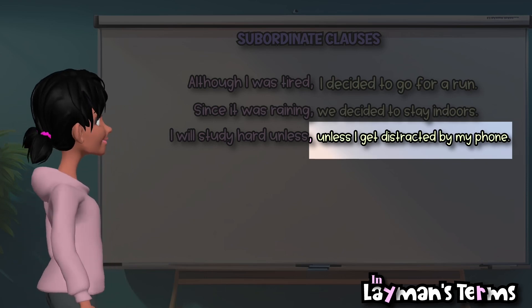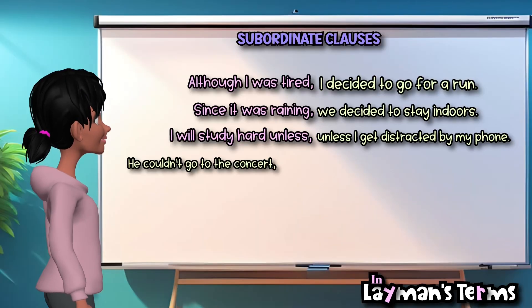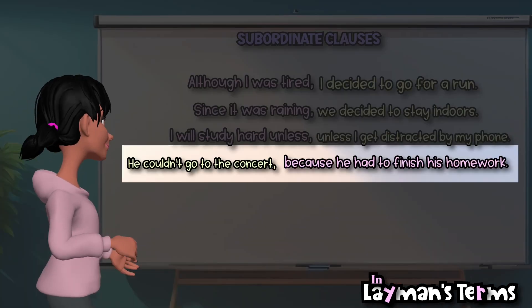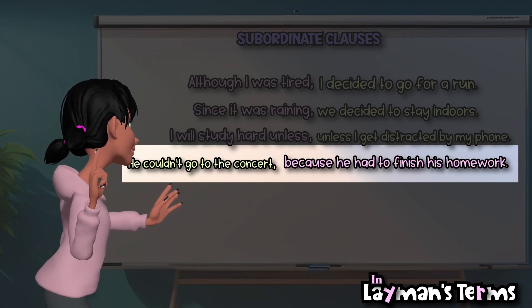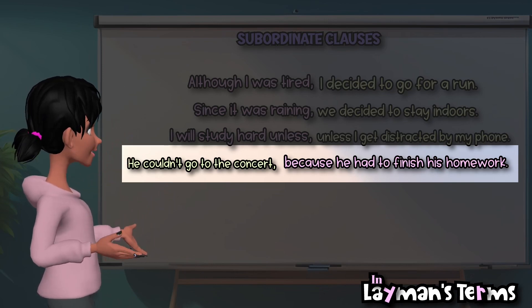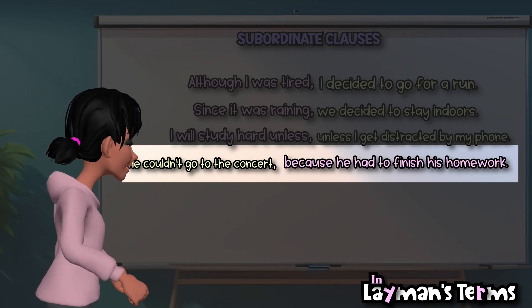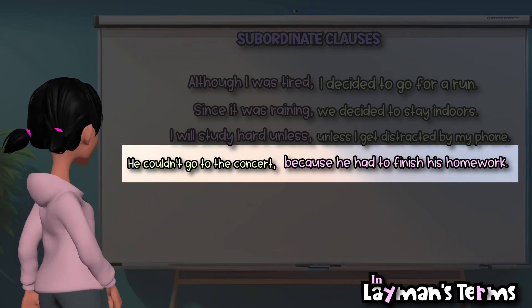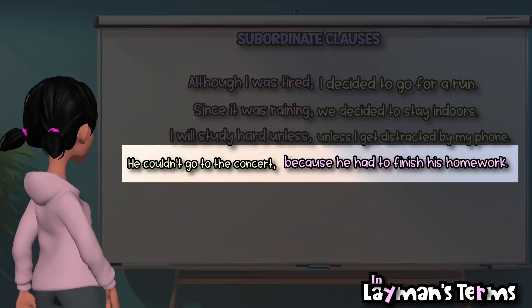He couldn't go to the concert because he had to finish his homework. The subordinate clause, because he had to finish his homework, provides a reason for his inability to attend the concert.